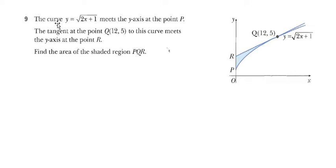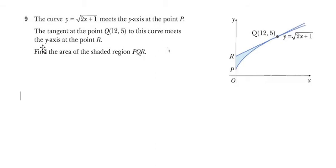We have the curve y equals the square root of 2x plus 1, which meets the y-axis at the point B. The tangent at the point Q(12, 5) on this curve meets the y-axis at the point R. Find the area of the shaded region BQR.